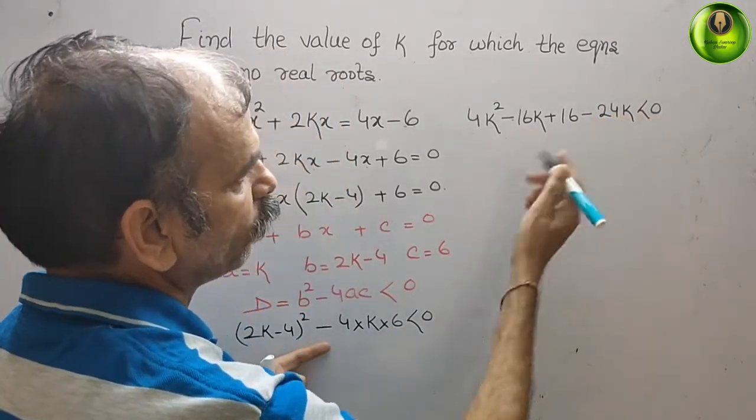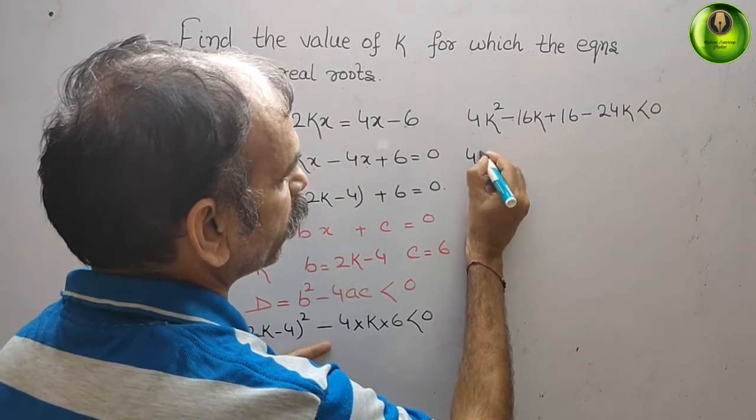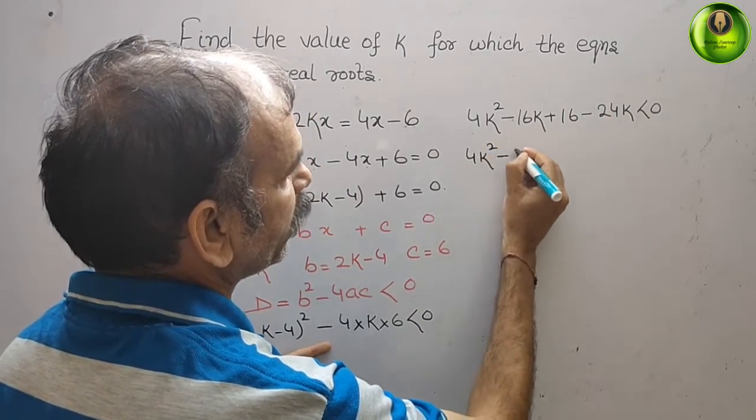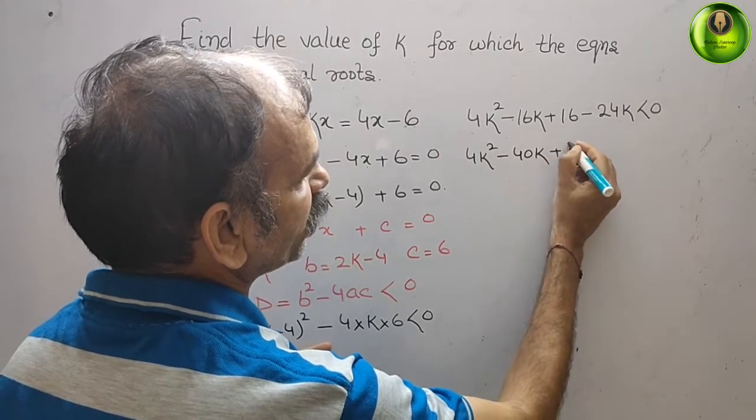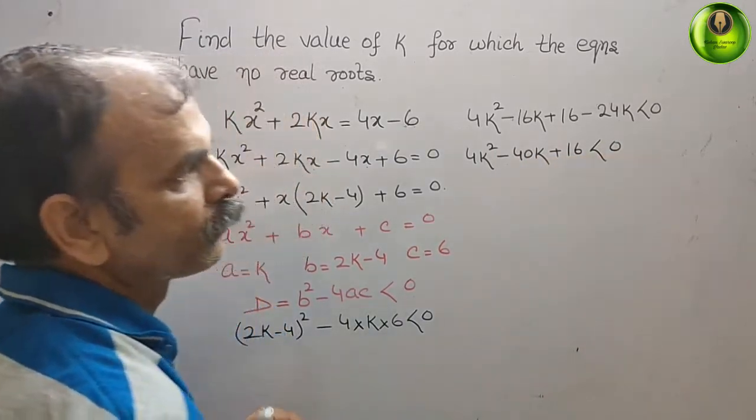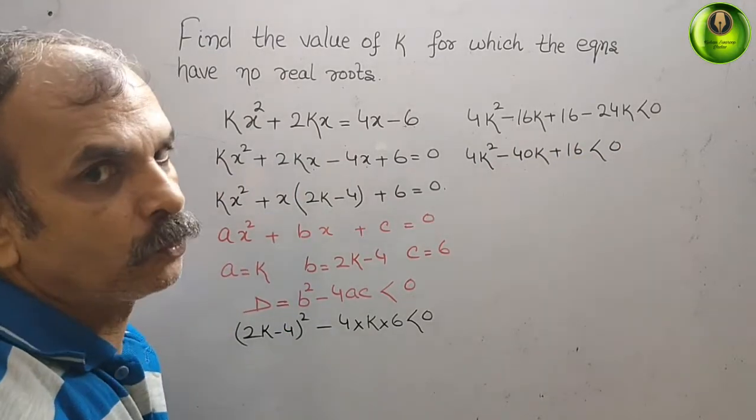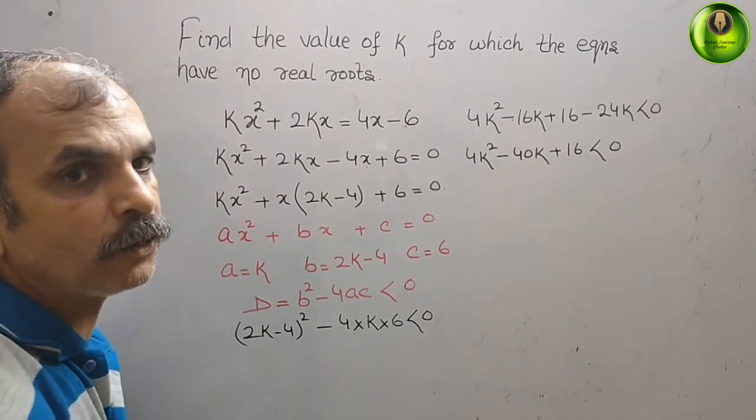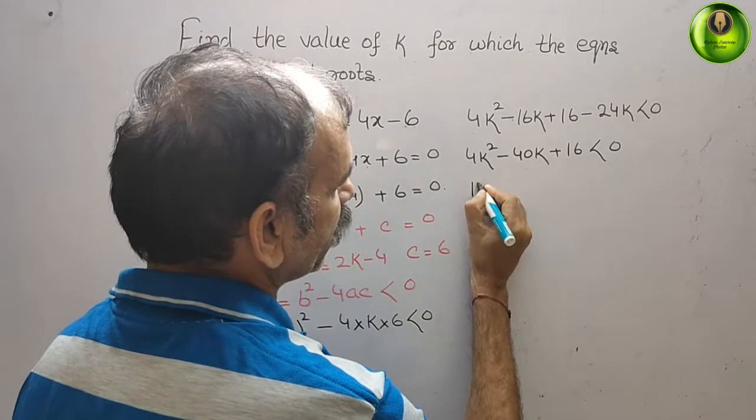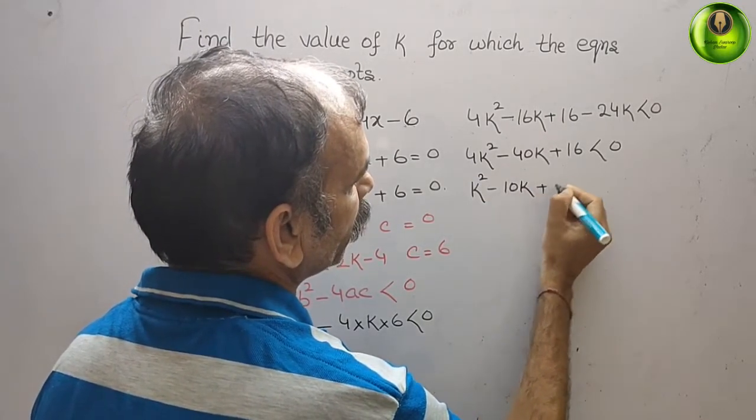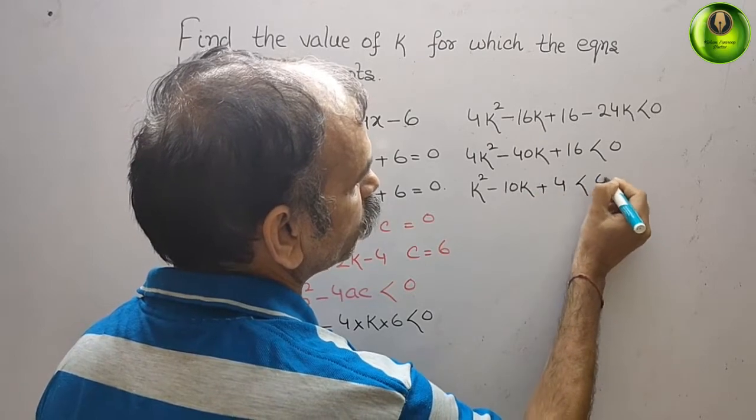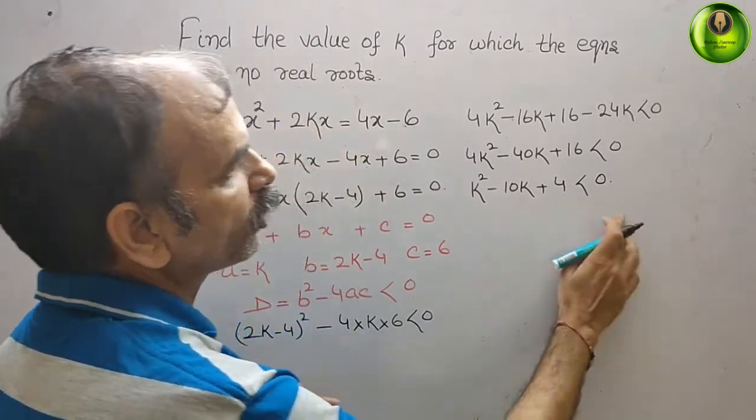Now solve this. What you will get? 4k² - 40k + 16 < 0. Now you can divide it by 4. What you will get? k² - 10k + 4 < 0. Now this is your equation.